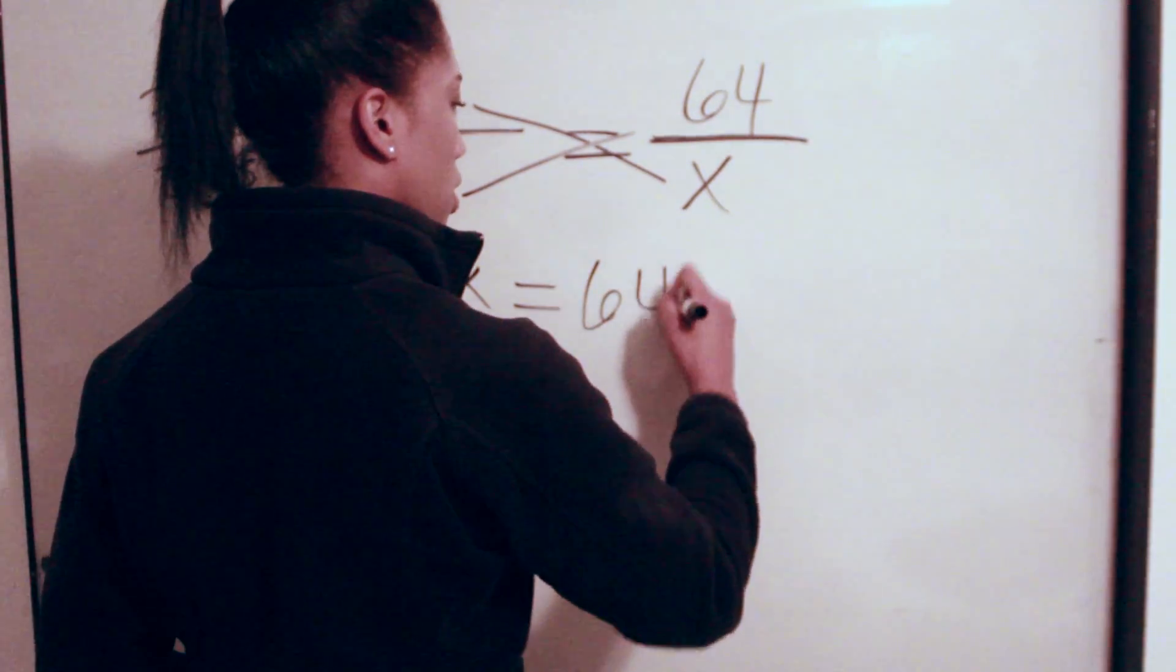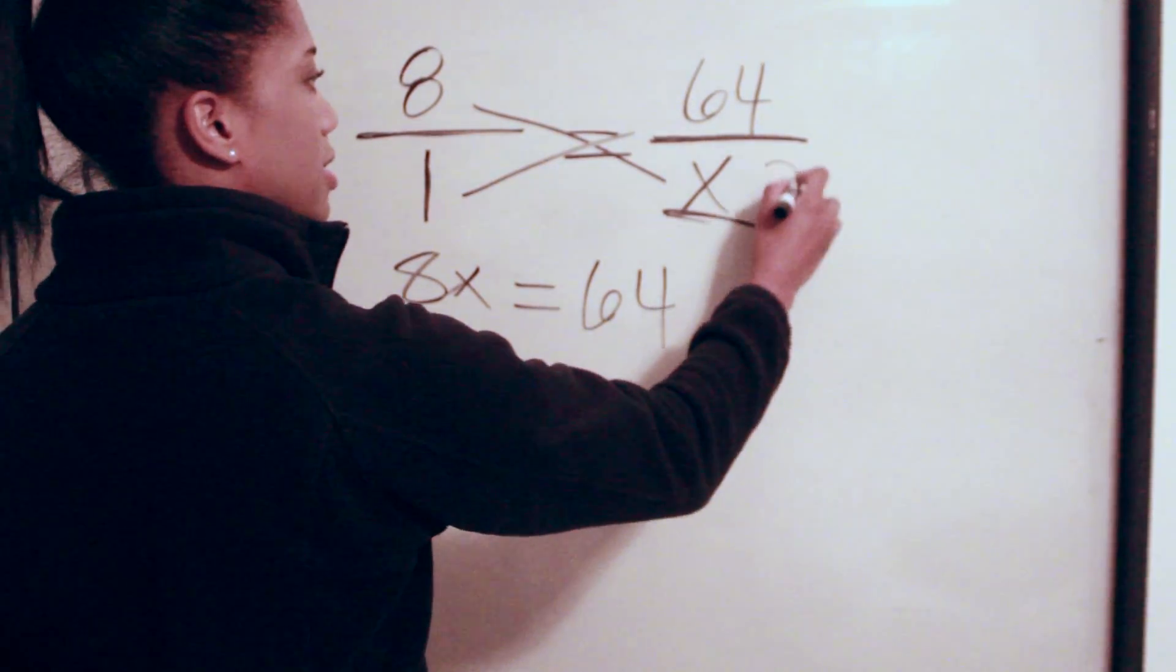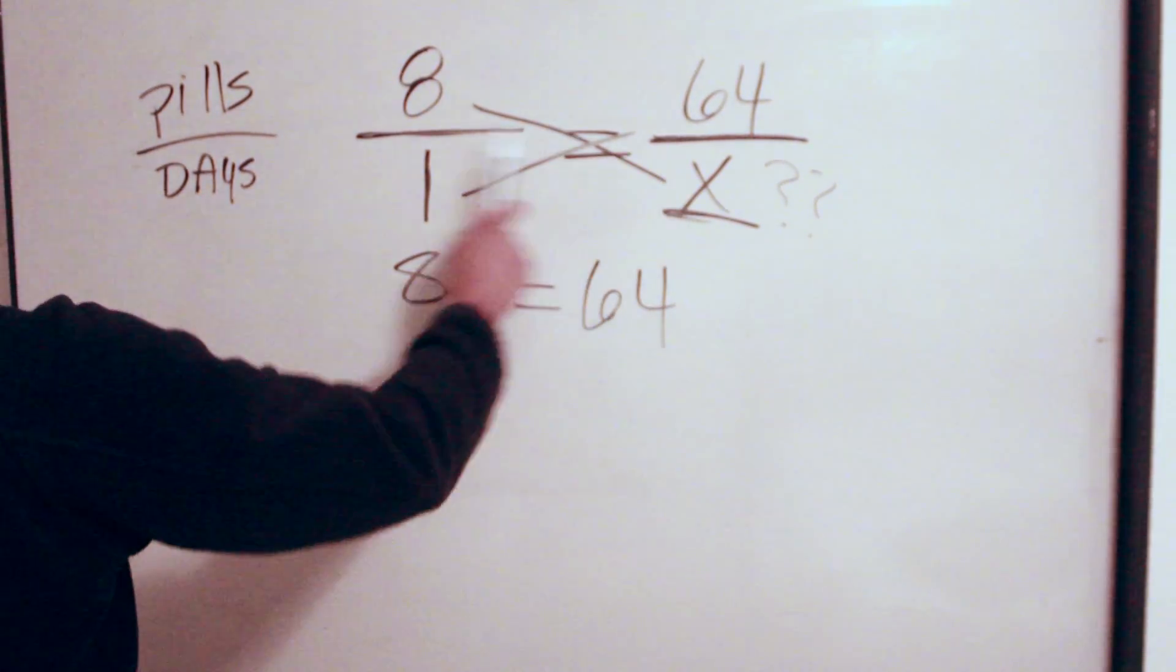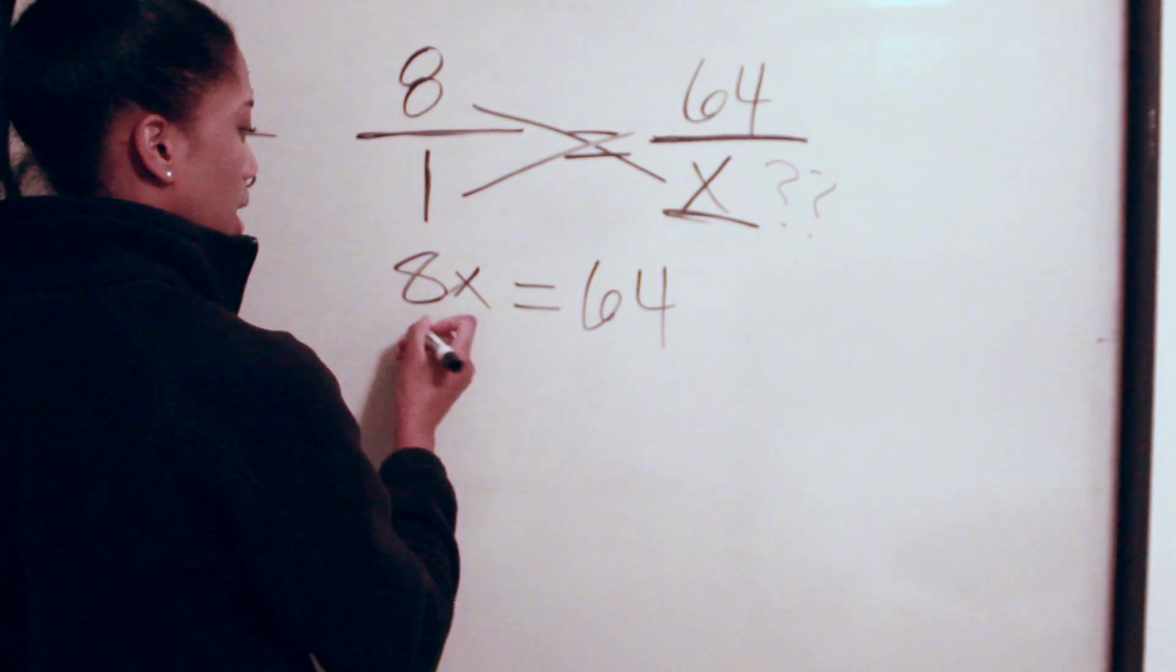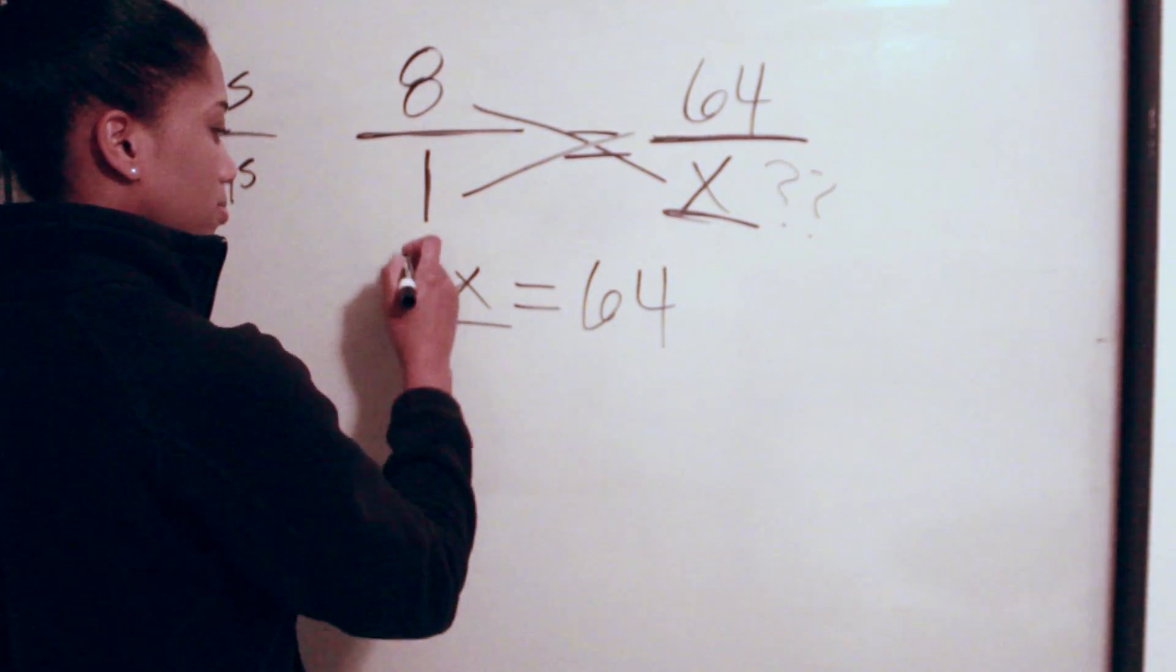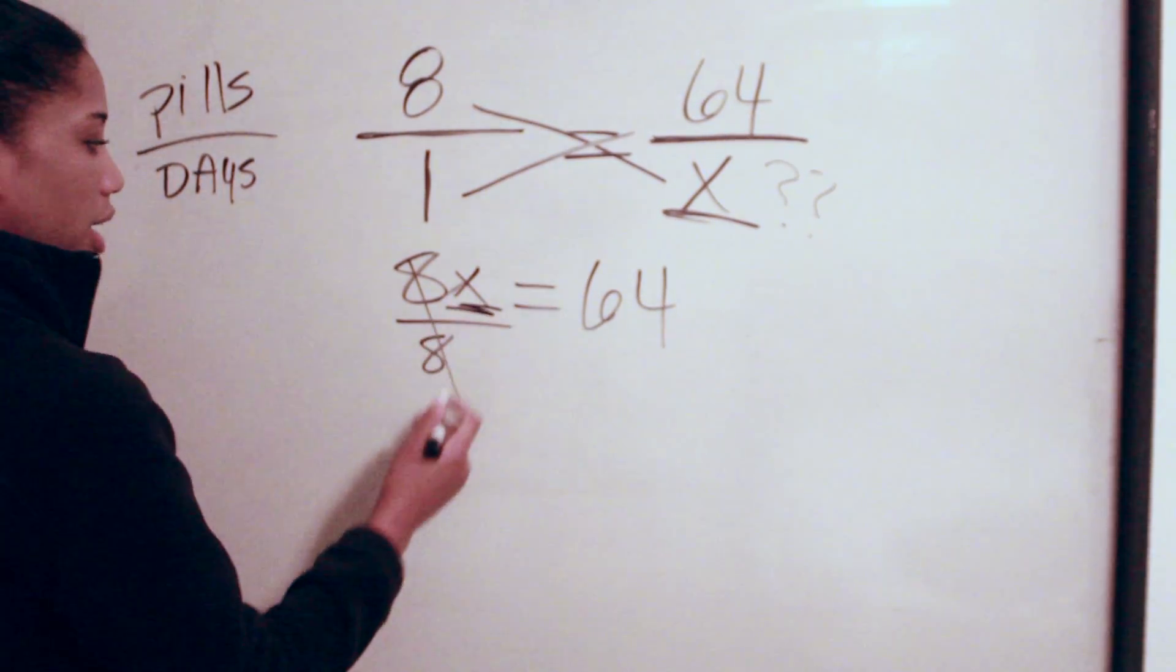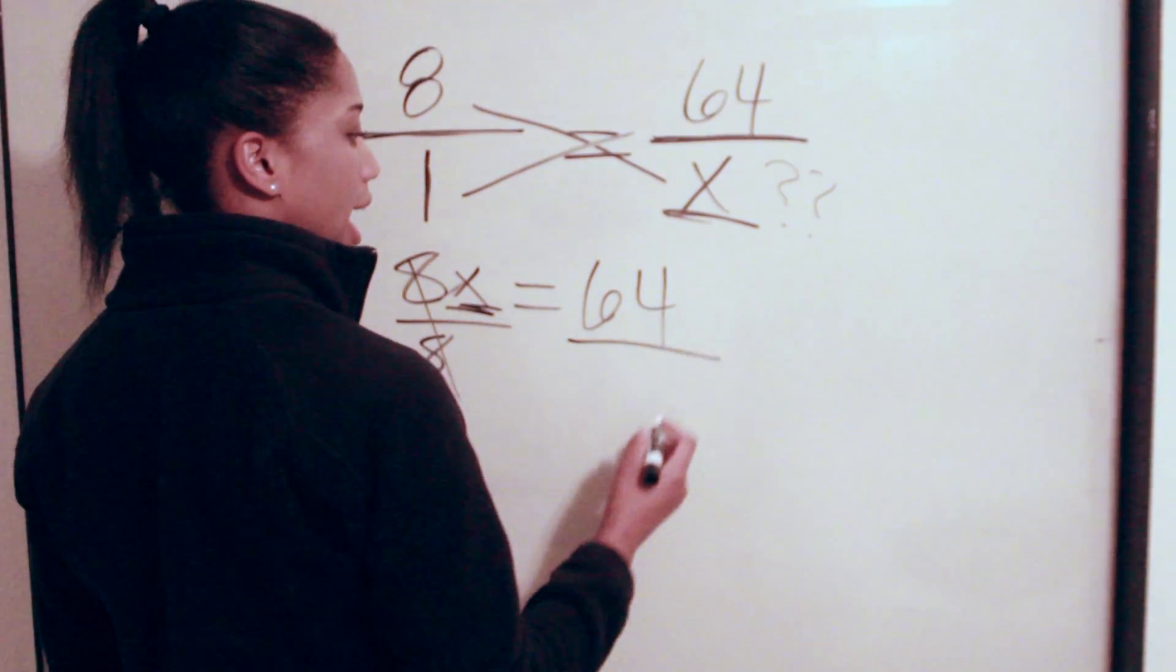Equals 64. Don't forget what your variable stands for—the variable is the missing link, and in this case our variable is days. Now we're going to divide eight because we have 8X, and now we need to isolate our variable to get our answer. Eight divided by eight crosses out.